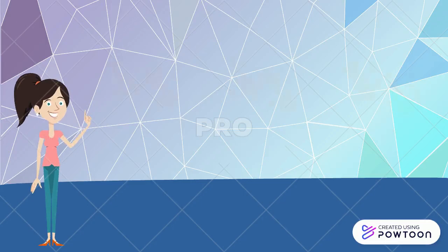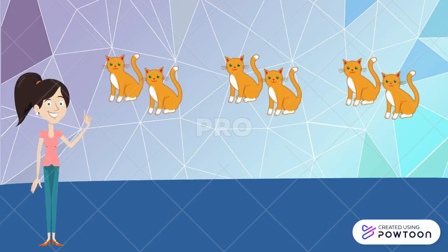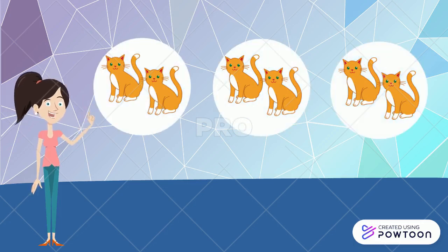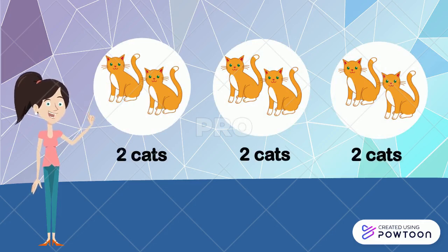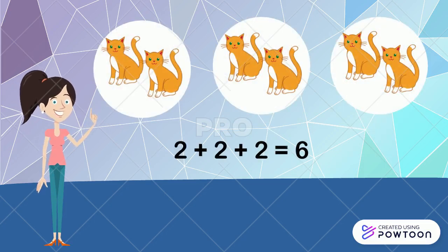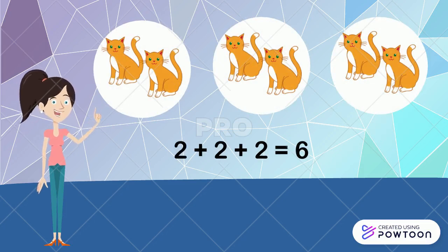Look at the pictures. There are three groups of cats. Let's count together: one, two, three. And each group has two cats — the same number, right? Now, we add the number of cats. Two plus two plus two is equal to six.